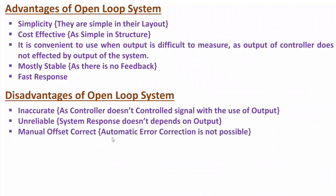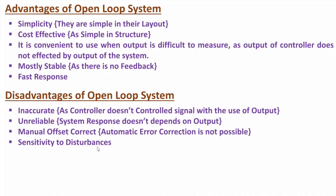Open loop systems need manual offset correction, because automatic error correction is not possible. The reason is there is no feedback of output — if you don't have feedback of output, automatic error correction is not possible. That's why open loop systems require manual offset correction. Also, open loop systems are sensitive to disturbances, meaning if a disturbance arises, the rate of change of output is also fast, so open loop systems are sensitive to disturbances.